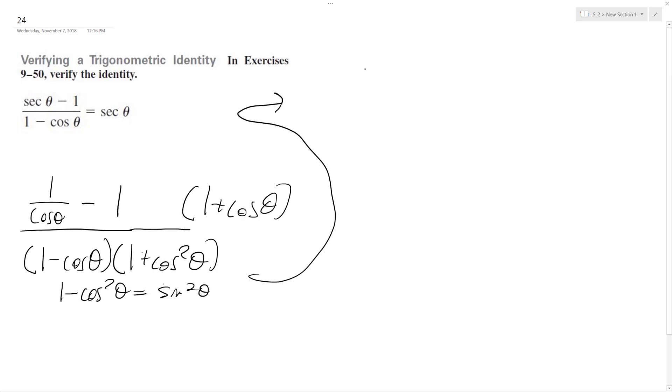So I'm left with 1 minus cosine theta, minus 1 times 1 plus cosine theta, multiplying these. And now you've got this all over sine squared theta.